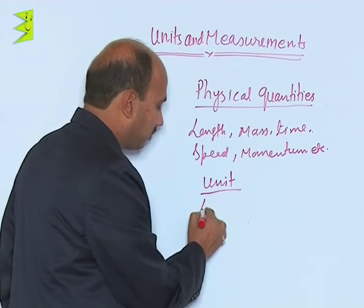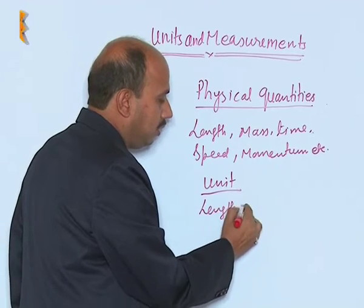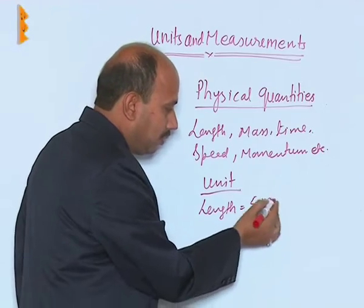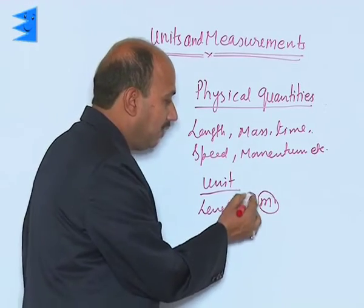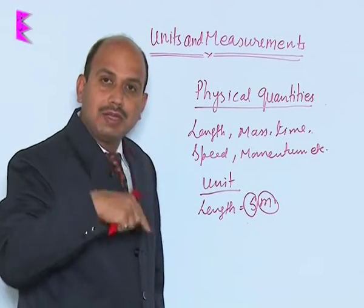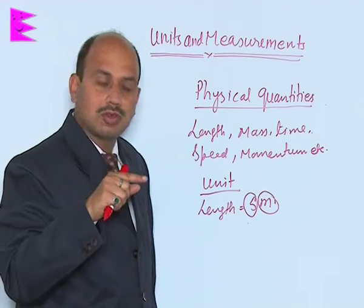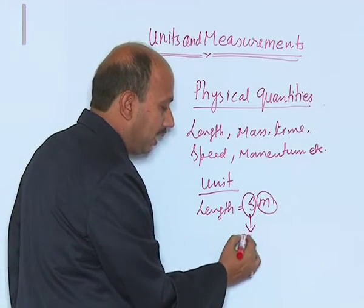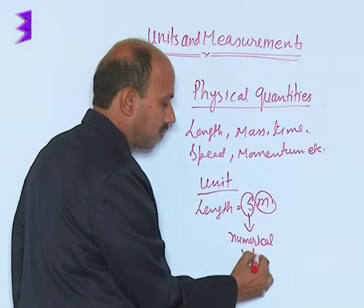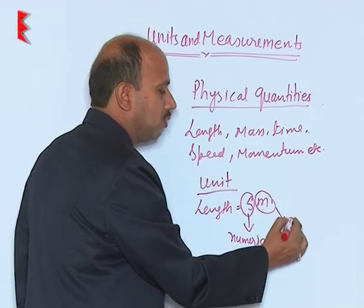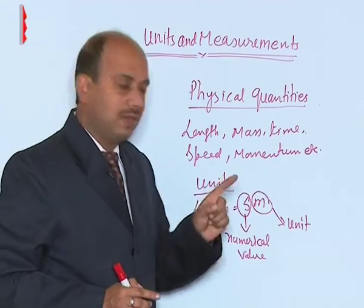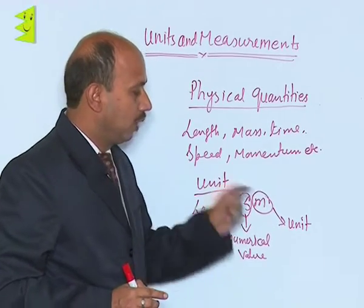Suppose you are writing length as 5 meter. In this, 'meter' is the unit and '5' is the numerical value — the meter has been repeated 5 times. So, '5' is known as the numerical value and 'meter' is the unit. For measuring any quantity, we need two things: one is a numerical value and one is a unit.